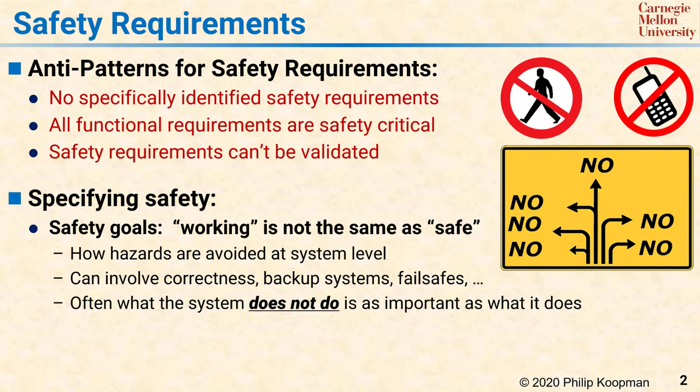For example, consider a system that is safe when its power is turned off. Normal functionality might involve when you press the on button, the system turns on. But safety is more likely a combination of two things: first, it turns off when you press the off button, and second, a bit more subtly, it does not turn on all by itself even though nobody pressed the on switch.